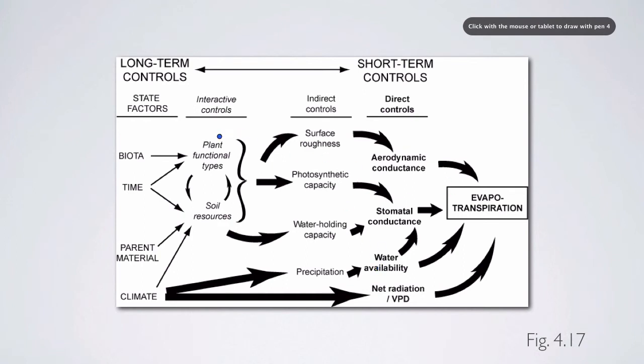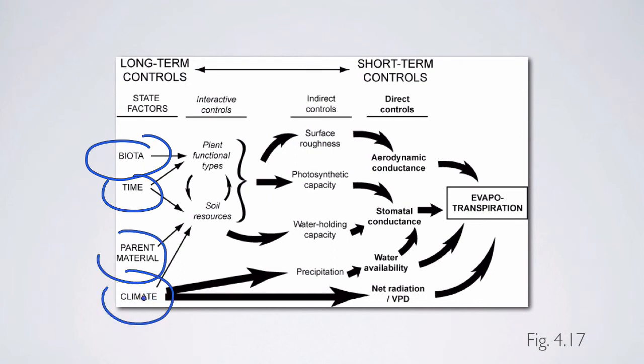And once we understand these proximal controls into the interactive controls, we can think about the biota, time, parent material, and climate. So a place that typically has a hot, dry climate is going to have a high net radiation, but also you need to have a lot of precipitation in order to, in the end, have a high evapotranspiration. Having parent material that generates soils that have a high water holding capacity are going to be necessary for high ET. Parent material that's really sandy, for example, might not hold that much water, and you're going to have a lot less evapotranspiration in the end.